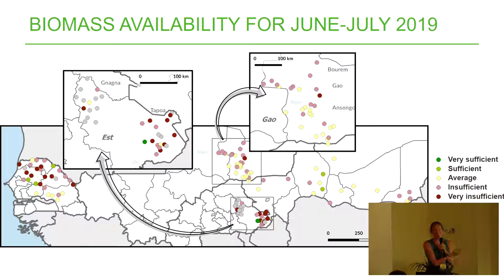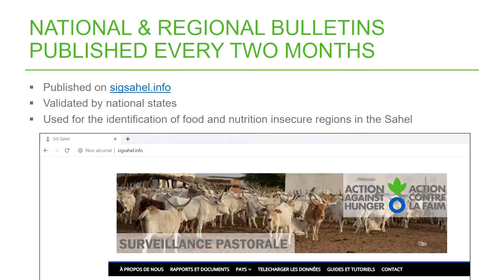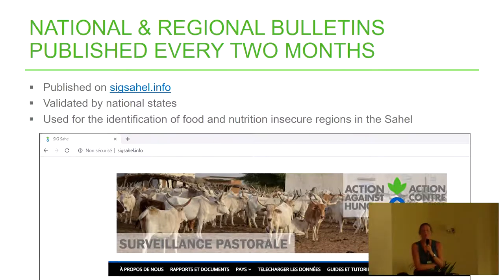At the end, we are able to build maps: for each data collector located at a specific place, we have information such as biomass availability. We can compare these maps to our satellite imagery to see if they point in the same direction. We use this data to publish national and regional bulletins every two months on sikhsahel.info, validated by national states. This is used for the identification of food and nutrition insecure regions in the Sahel.